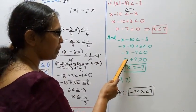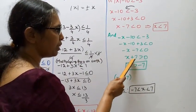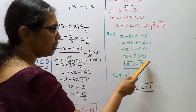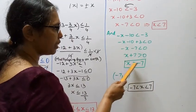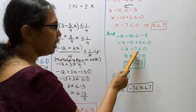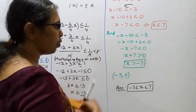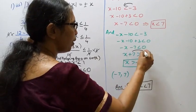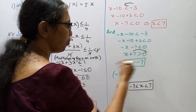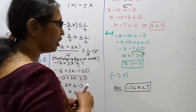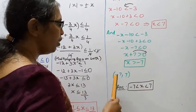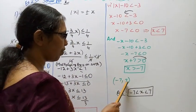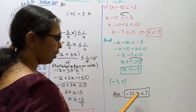Second case: minus x gives plus x greater than 0, so x is greater than 7. Wait — combining both cases, x lies between minus 7 and 7, i.e., minus 7 less than x less than 7.